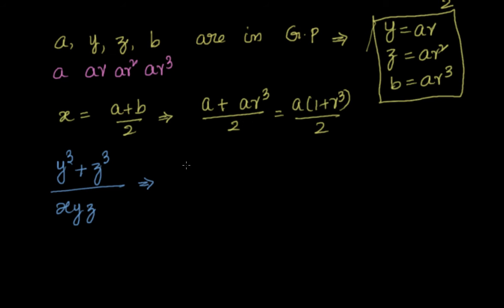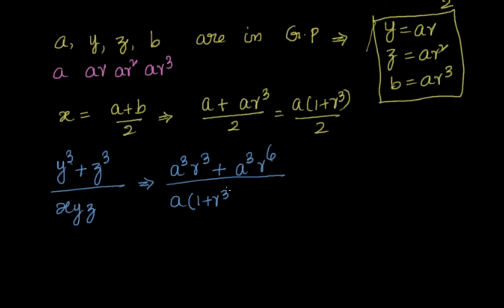y³ is a³r³, and z³ — since z is ar² — gives a³r⁶. So the numerator is a³r³ plus a³r⁶. The denominator is x times y times z: x is a(1 + r³)/2, y is ar, and z is ar².